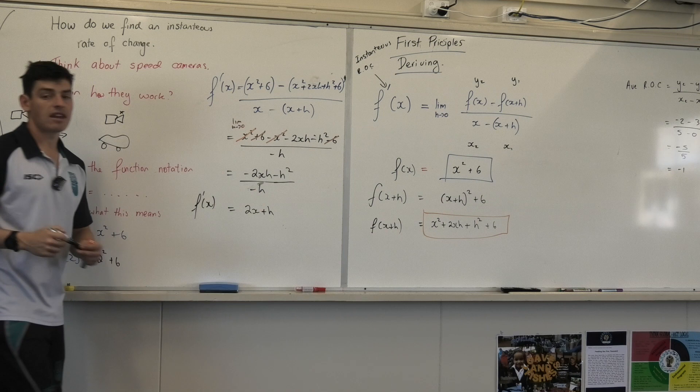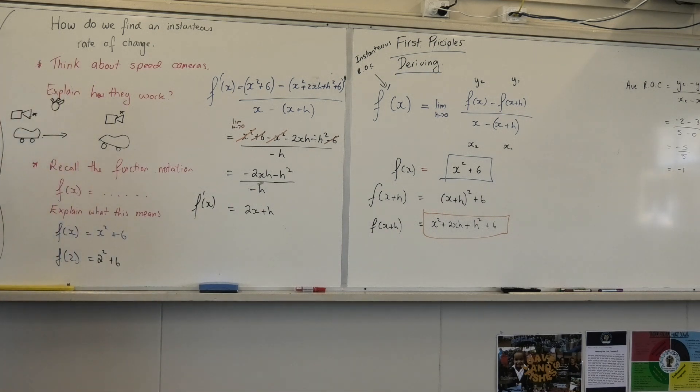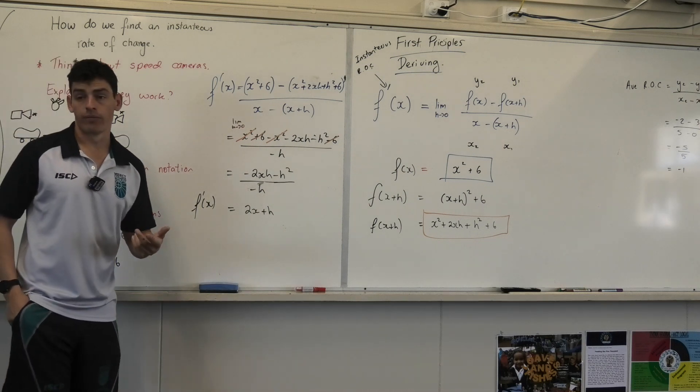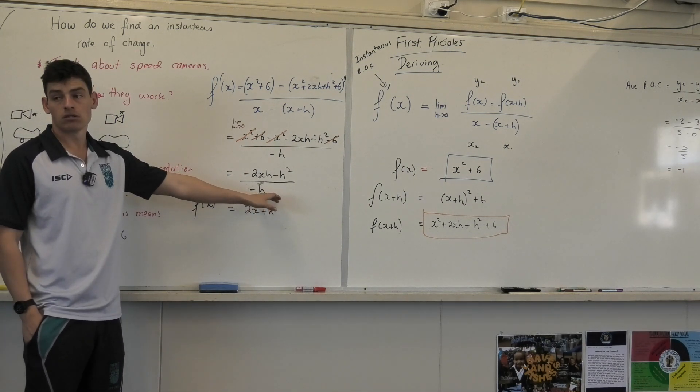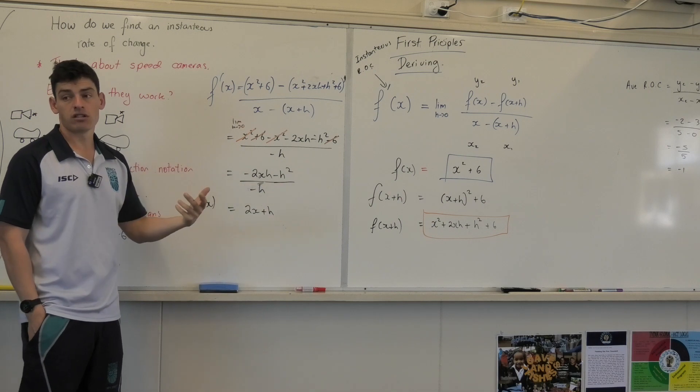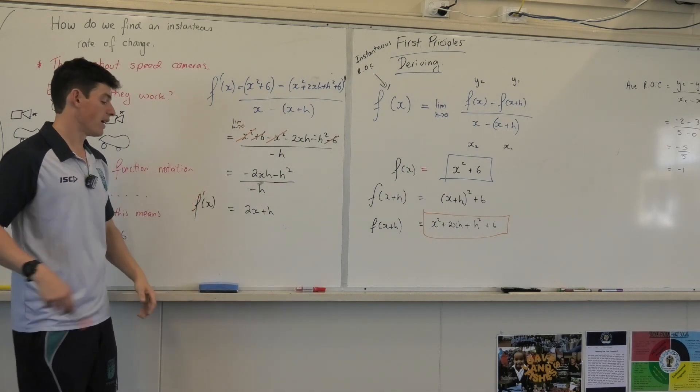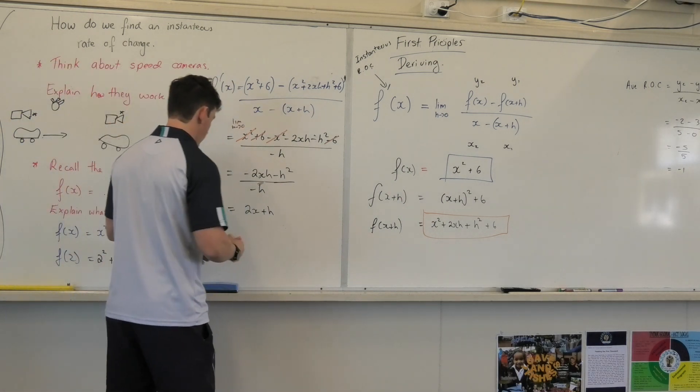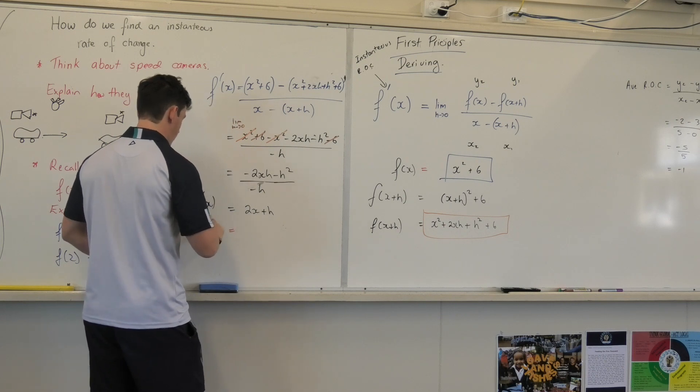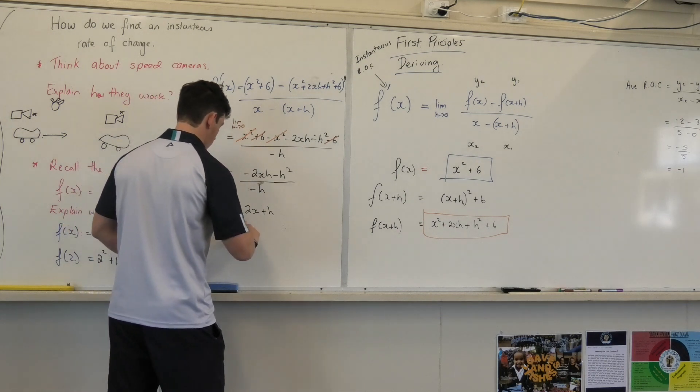Now what did I say that h is approaching? 0. It's so, so close to 0 that we can treat it like 0. That's why I had to get rid of that bottom h. Can I divide by 0? So I had to get rid of that bottom h. So I'm left with f'(x) equals 2x.